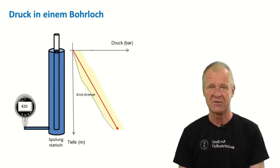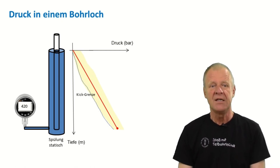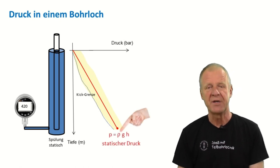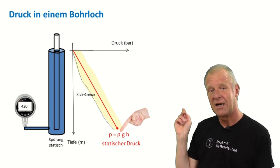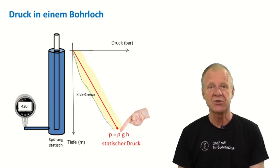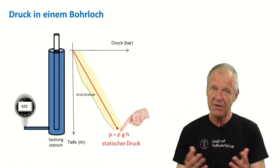The pressure in the borehole is quite easy to calculate using this simple formula: pressure equals mud density times acceleration due to gravity times depth of the borehole. Now, that's the static pressure in the borehole.